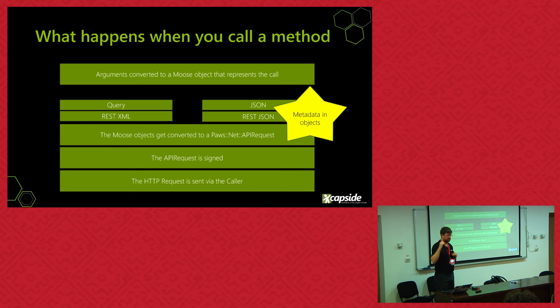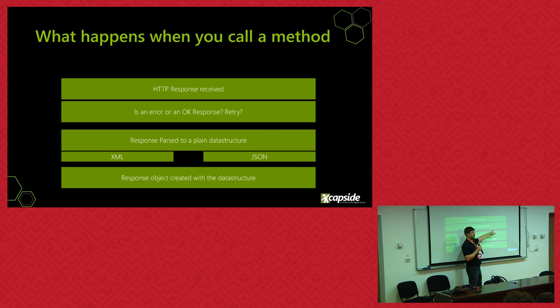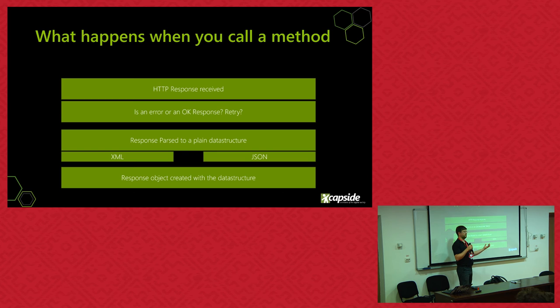Once we get the response — in XML or JSON — it gets parsed into a data structure, and that data structure gets coerced into Moose objects. Those are the objects that are returned to you, where you use accessors to get the values. The metadata in the objects says things like 'Paws::SQS::SendMessage has a parameter that's a string, and another that's a RequestId.' This is all specified in configuration files — the service definitions that AWS made available for their SDKs. They're essentially JSON definitions, similar to Swagger.